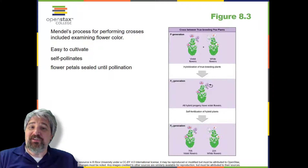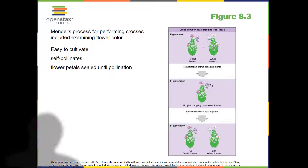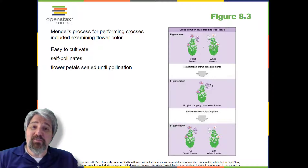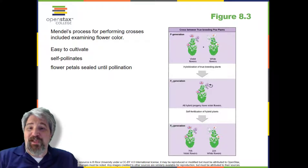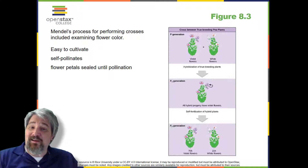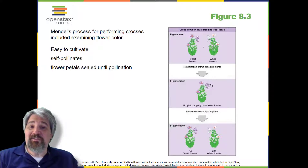Mendel's seminal work was accomplished using the garden pea, Pisum sativum, to study inheritance. This species naturally self-fertilizes, meaning that pollen encounters ova within the same flower. The flower petals remain sealed tightly until pollination is completed to prevent the pollination of other plants. The result is highly inbred, or true breeding, pea plants — plants that always produce offspring that look like the parent. By experimenting with true breeding pea plants, Mendel avoided the appearance of unexpected traits in offspring. The garden pea also grows to maturity within one season, meaning that several generations could be evaluated over a relatively short time. Finally, large quantities of garden peas could be cultivated simultaneously, allowing Mendel to conclude that his results did not come about simply by chance.